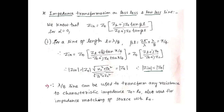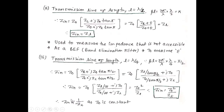For a transmission line of length L = λ/2: βL = (2π/λ)·(λ/2) = π, and tan(π) = 0. Substituting: Zin = Z₀·(Zl + 0)/(Z₀ + 0) = Zl. Therefore Zin = Zl. This property is used to measure impedance that is not accessible, as a band emission filter, and to measure permittivity of a medium.